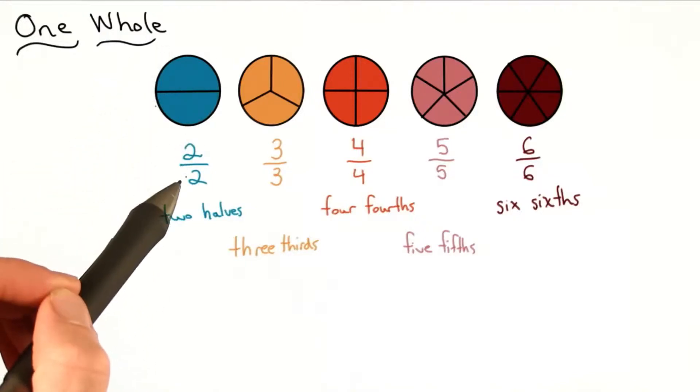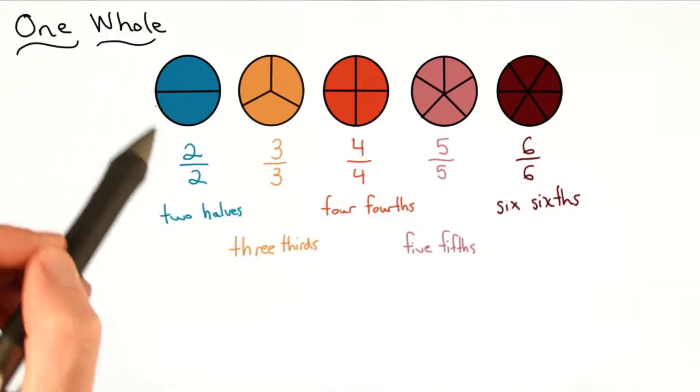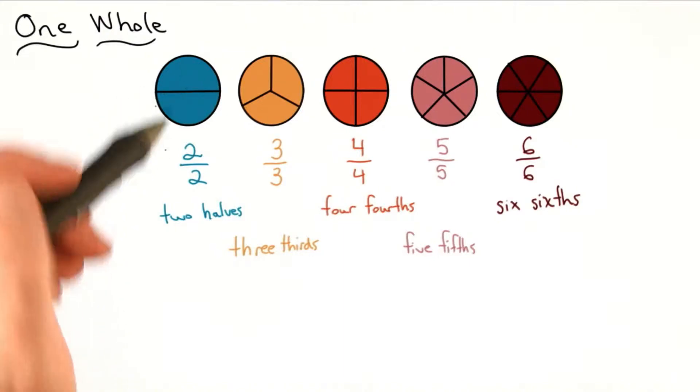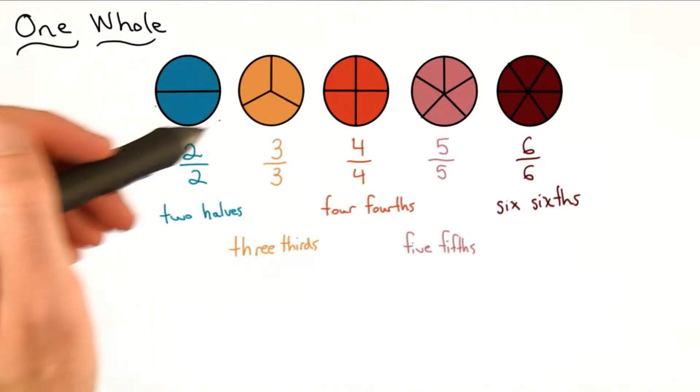Here in this first picture, I have 2 out of 2 parts. Notice that it's really 1 whole circle. I have 1 half and 2 halves.